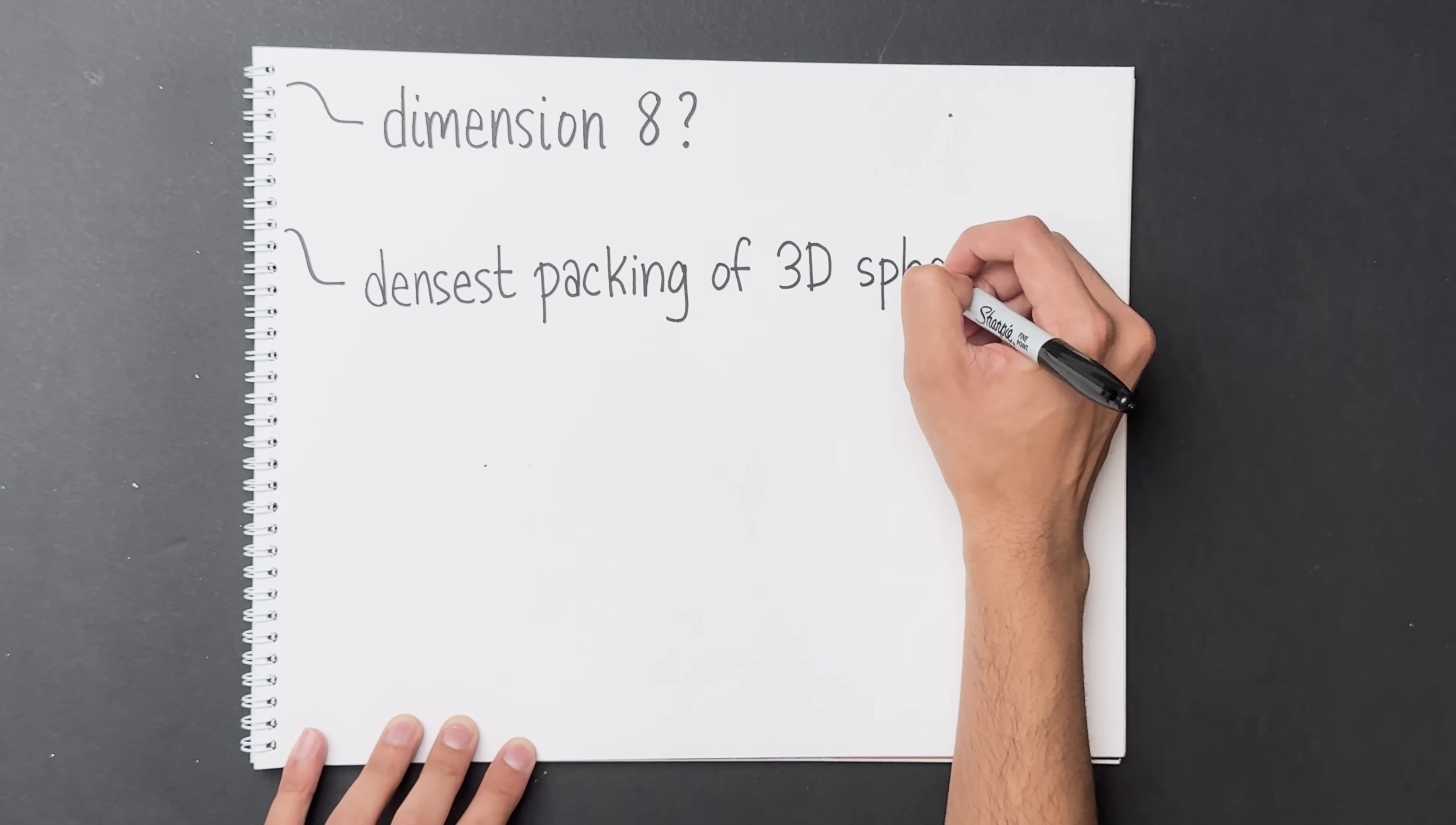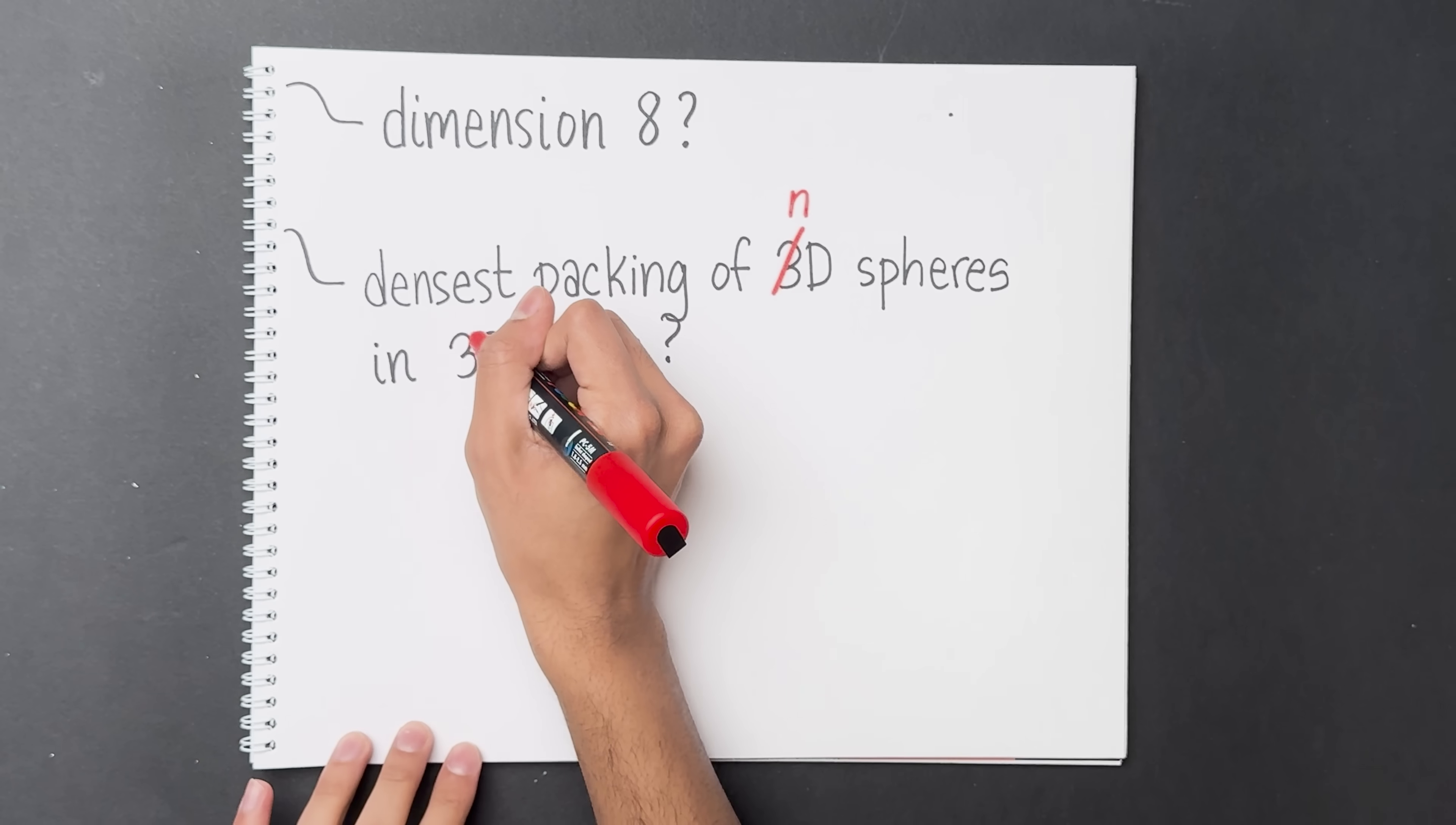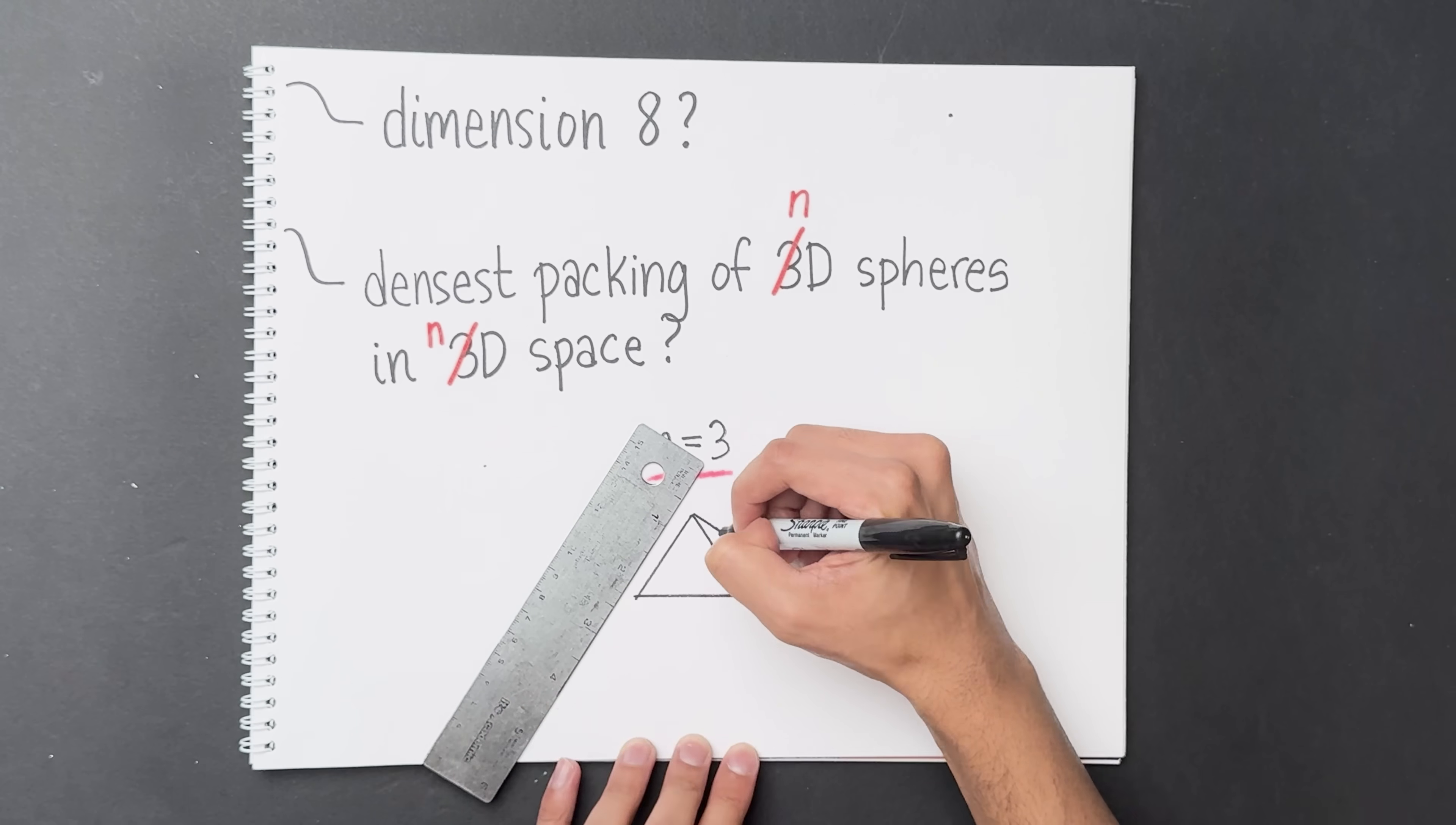Before we asked, what is the densest packing of three-dimensional spheres in three-dimensional space? What about n-dimensional spheres in n-dimensional space? Well, we already know the answer when n equals 3, it's the pyramid.